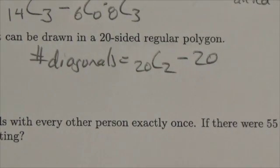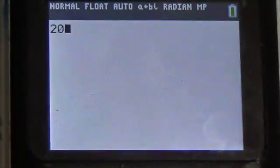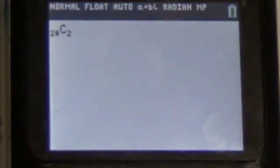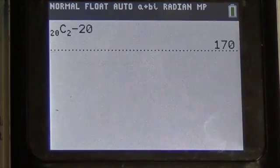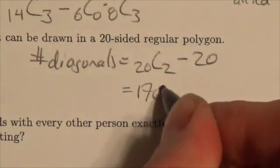Now I'm actually going to do this question. So we'll make this 20 choose 2 minus 20, and we're getting that there's 170 diagonals.